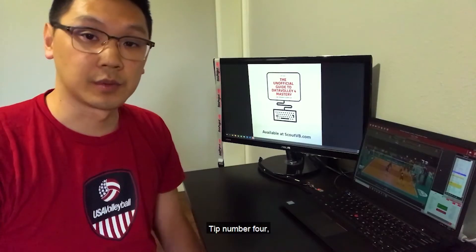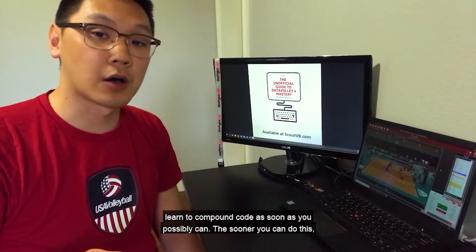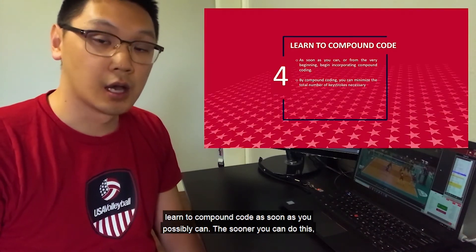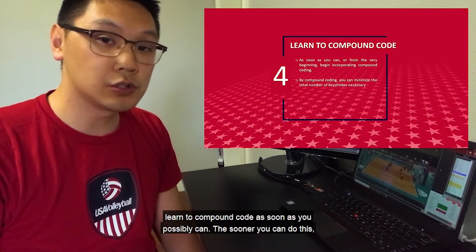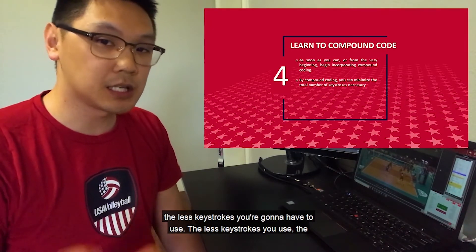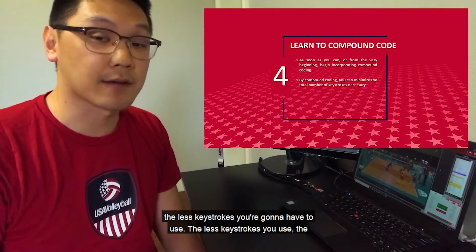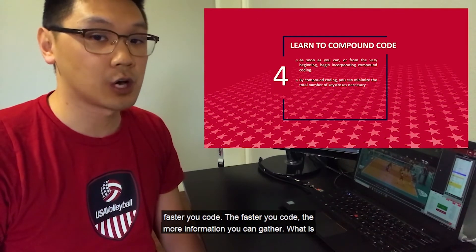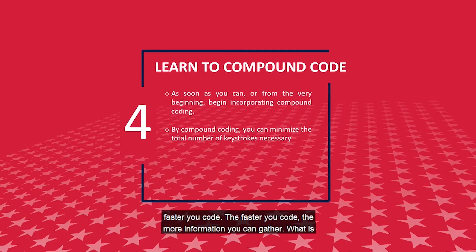Tip number four: learn to compound code as soon as you possibly can. The sooner you can do this, the less keystrokes you're going to have to use. The less keystrokes you use, the faster you code. The faster you code, the more information you can gather. What is compound coding? Let's take a look.